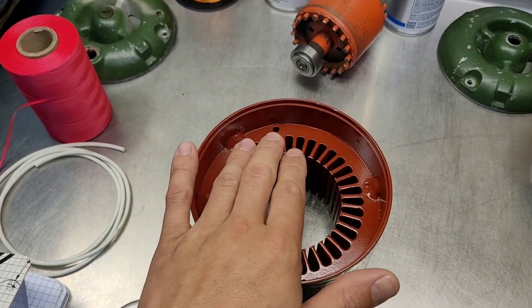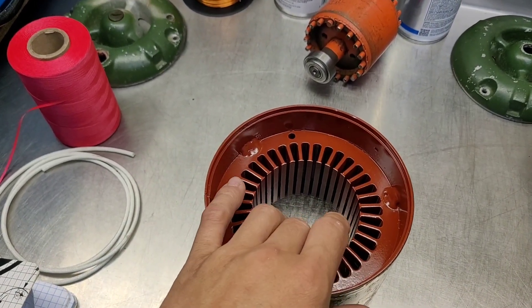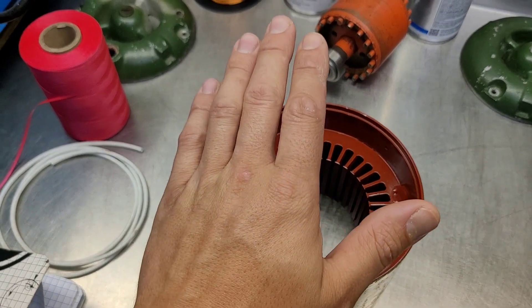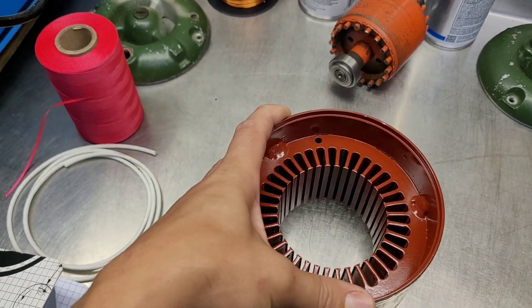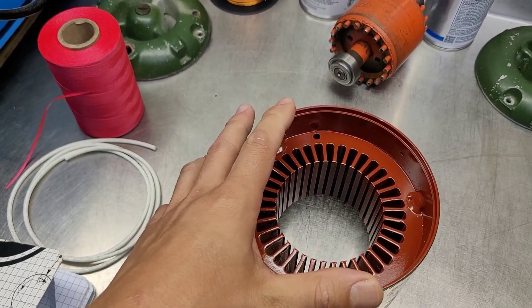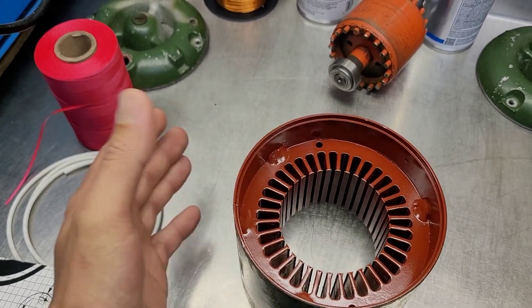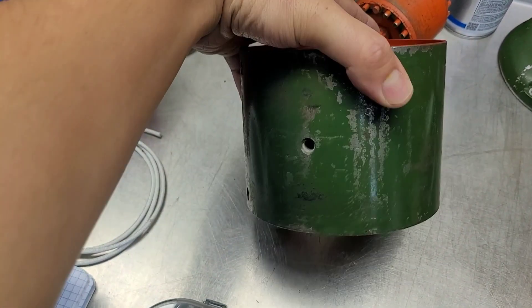Everything has been cleaned out so we have pretty much a brand new motor again as far as the core of it. Now the outside still has the original ILG paint. I didn't mess with that too much.